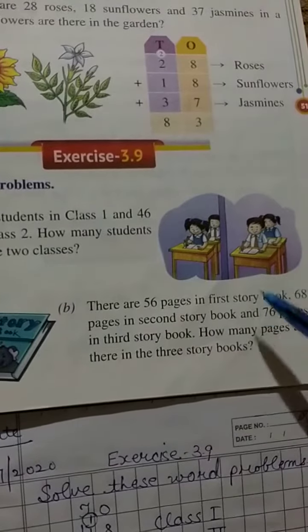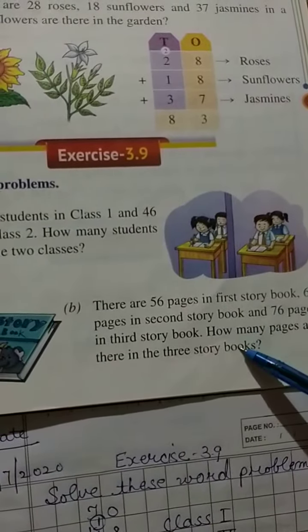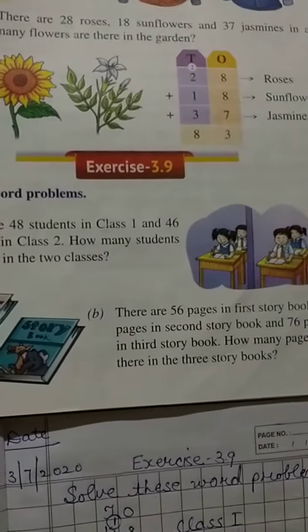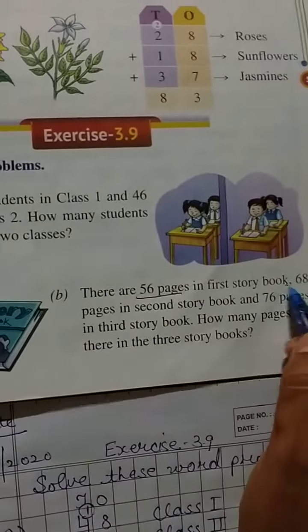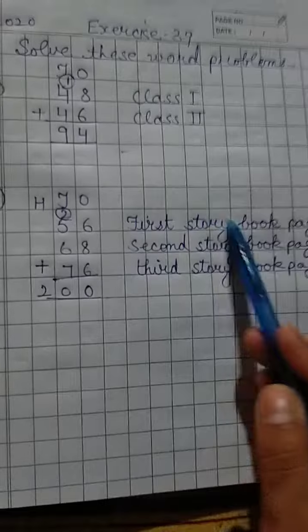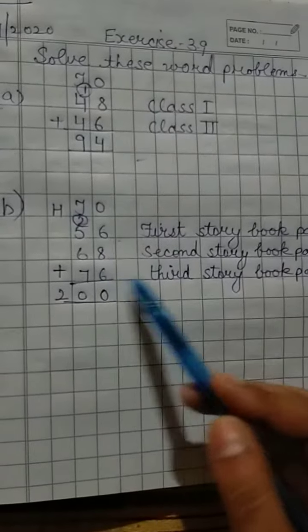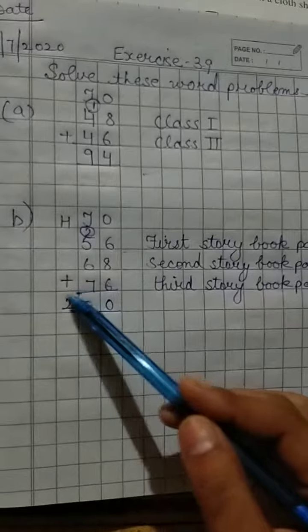To find the total pages across all three story books, we will add them together: the first story book has 56 pages, the second has 68 pages, and the third has 76 pages. Adding these gives us the total number of pages.